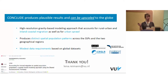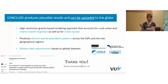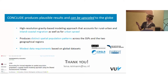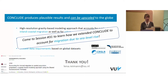To wrap up: we produced a high-resolution gravity-based model that accounts for urban-rural inland-coastal migration as well as for urban sprawl, and it produces distinct spatial population patterns across the SSPs and the two geographical regions of the Mediterranean. Because of its modest data requirements — using all global-scale data sets — it can be upscaled to the globe quite easily. The paper has been published in Environmental Research Letters. I will also present an extension of this model to account for sea level rise-related migration in session 31 tomorrow.